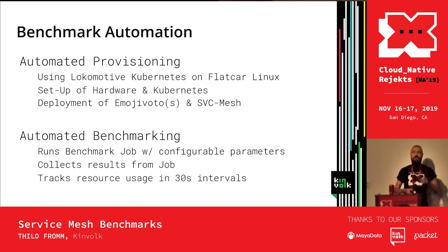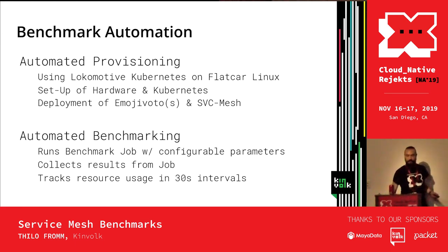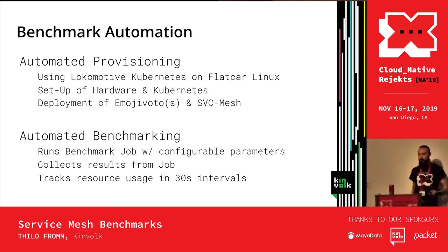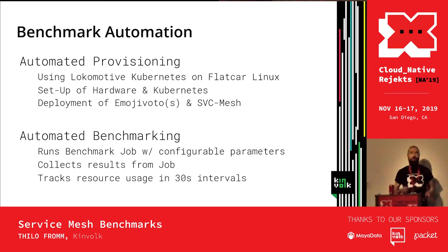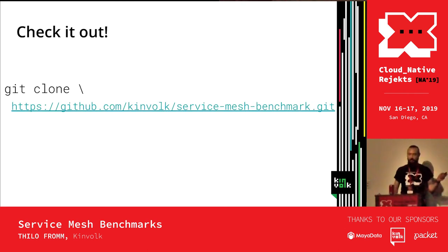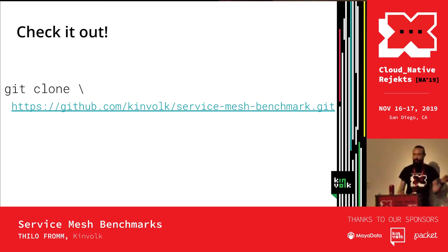The benchmark automation provisions the cluster completely automatically using Packet's API — hardware set up, Flatcar Linux installed, Kubernetes installed via Lokomotive — then deploys EmojiVoto and installs the service mesh. The automated benchmarking runs the WRK2 benchmark job, collects results, and collects resource usage data while the benchmark runs. Admittedly it's just a bash script on kubectl rather than a cloud-native application. The URL is available if you want to run the same benchmarks we did — just run a shell script.